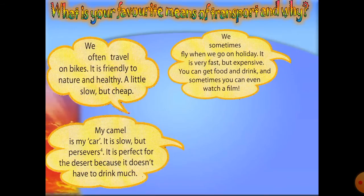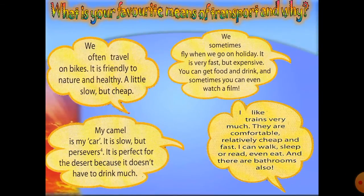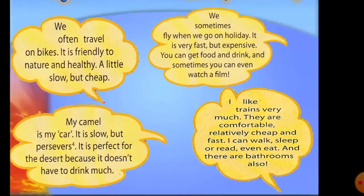Example three: my favorite is the camel — it's slow but perseveres. It is perfect for the desert because it doesn't need to drink too much, so we call it the Sahara ship. Example four: I like trains very much — they're comfortable, relatively cheap, and fast. You can walk, sleep, read, or even eat, and there are bathrooms too.